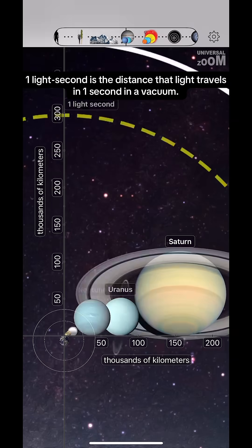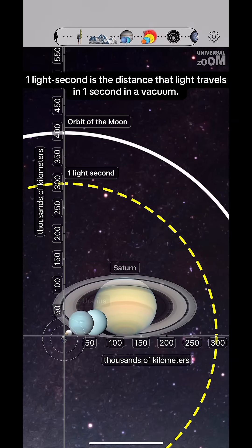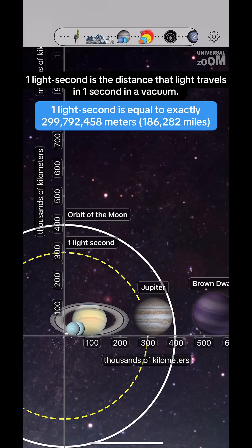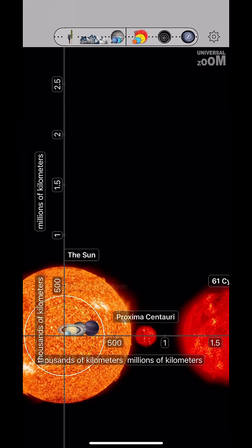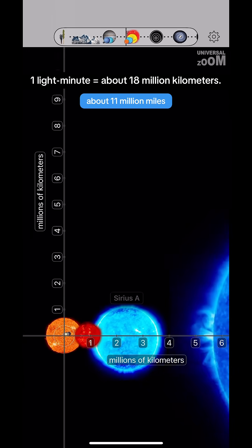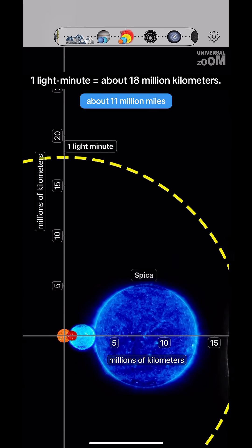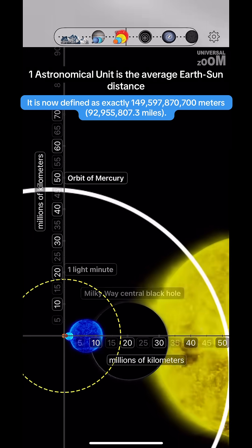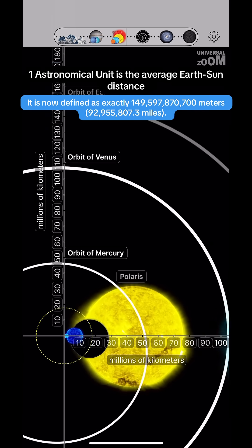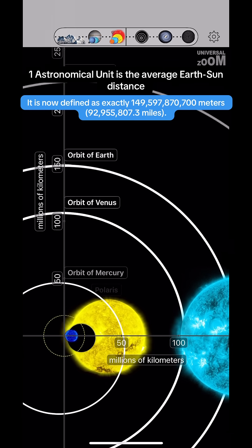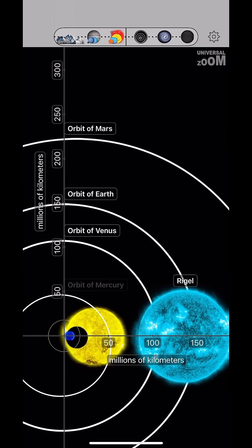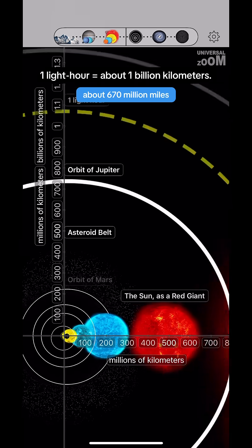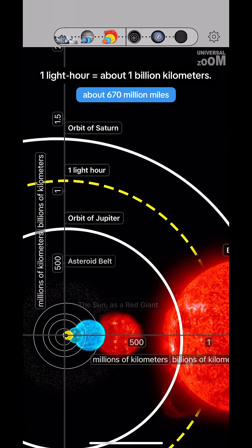One light second is the distance that light travels in one second in a vacuum. One light minute equals about 18 million kilometers. One astronomical unit is the average Earth-Sun distance. One light hour equals about 1 billion kilometers.